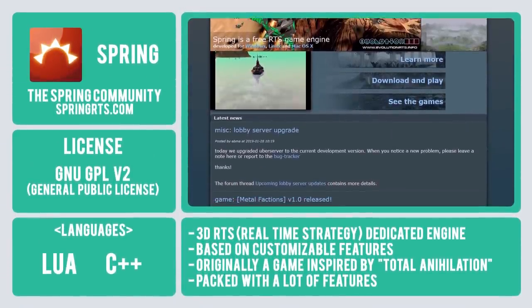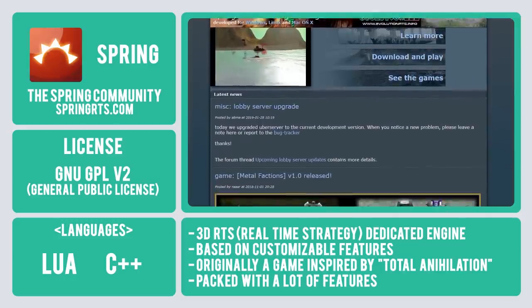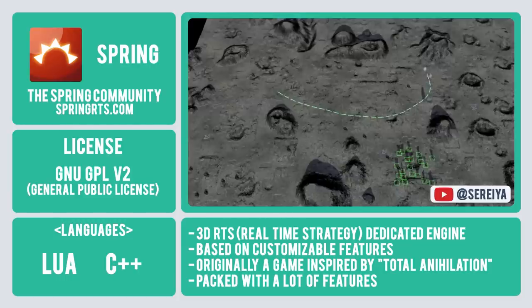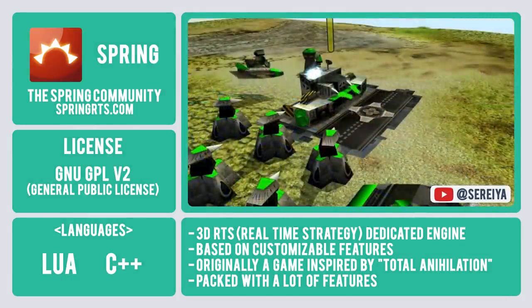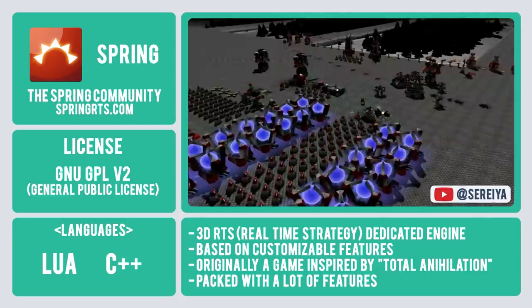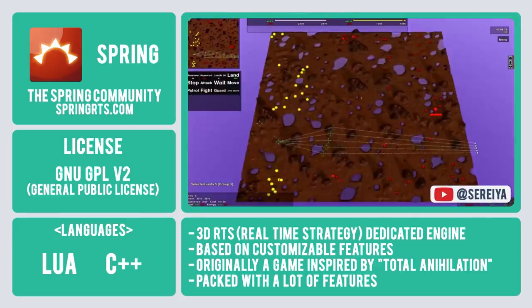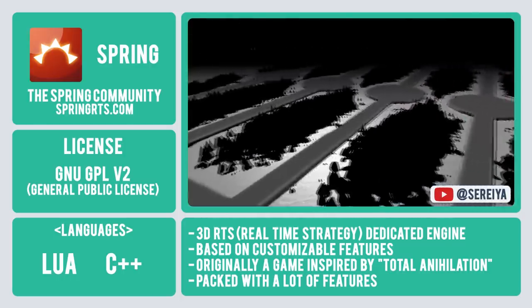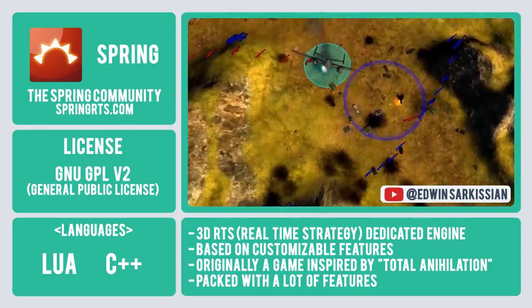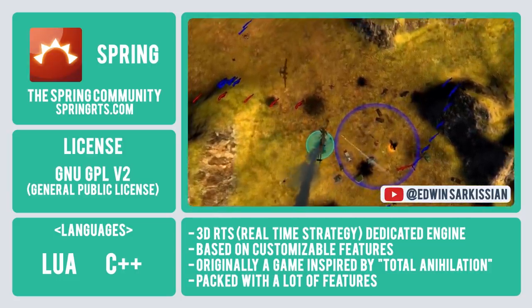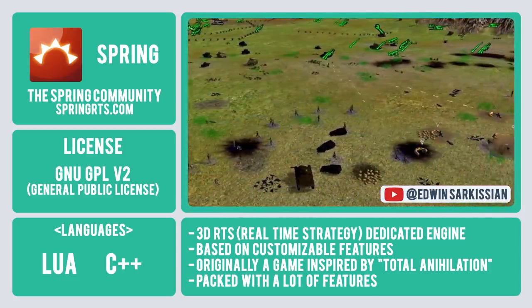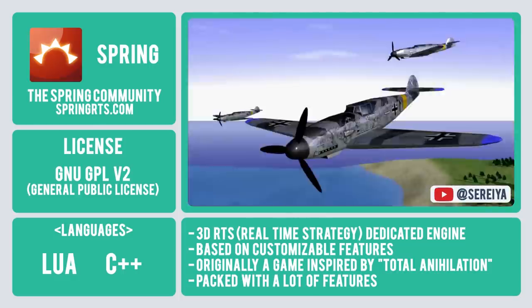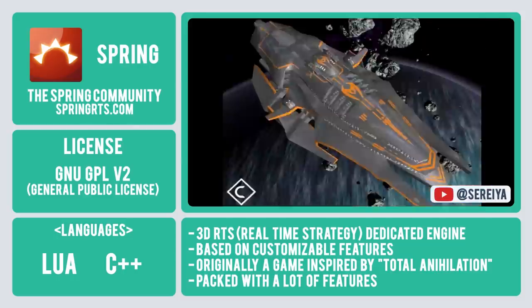Third on our list is Spring Engine, a 3D RTS open source engine. Using Lua and C++, developers are capable of customizing every aspect of this engine, including the user interface, AI, and pathfinding modules. Spring Engine is unique in its origins, as it originally began as an RTS game and was later developed into an open source engine to be used by not only the original developers but others as well, to create additional RTS-based titles under the new general public license.